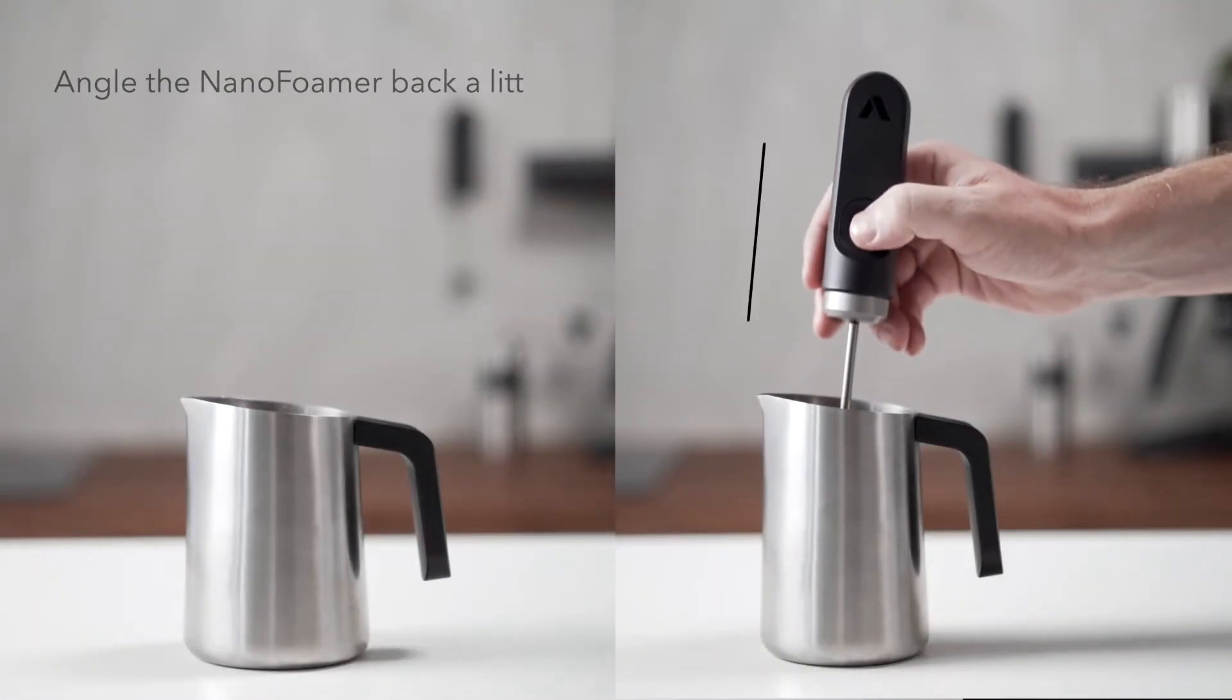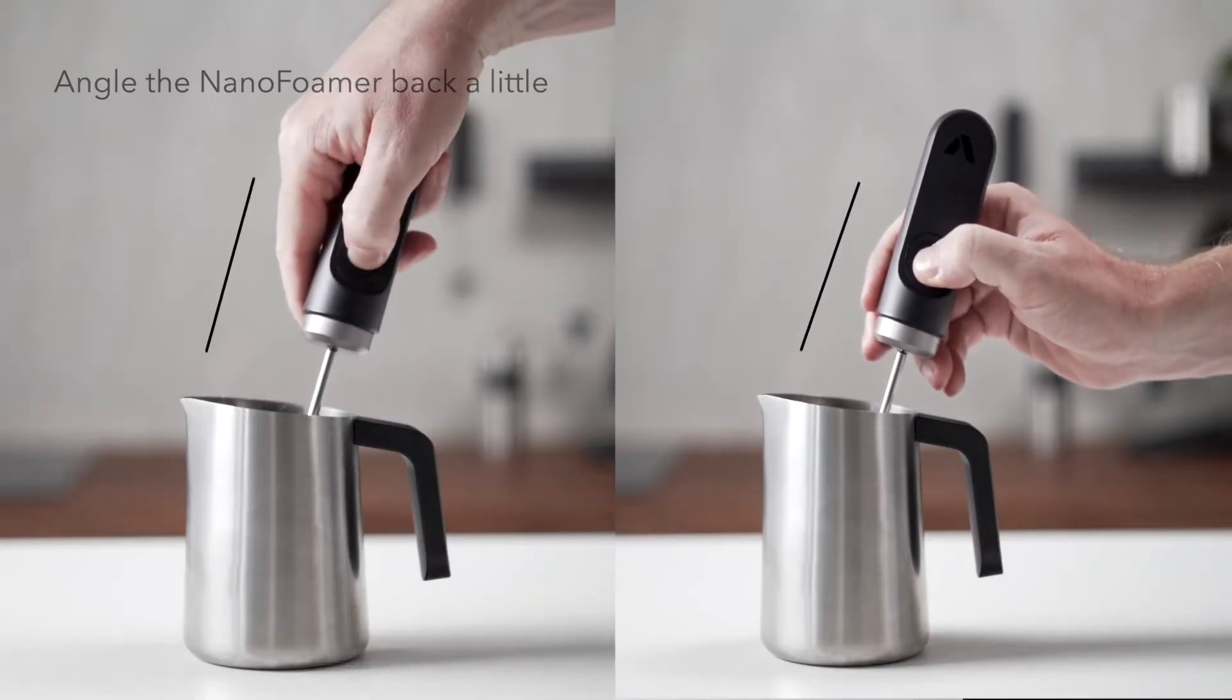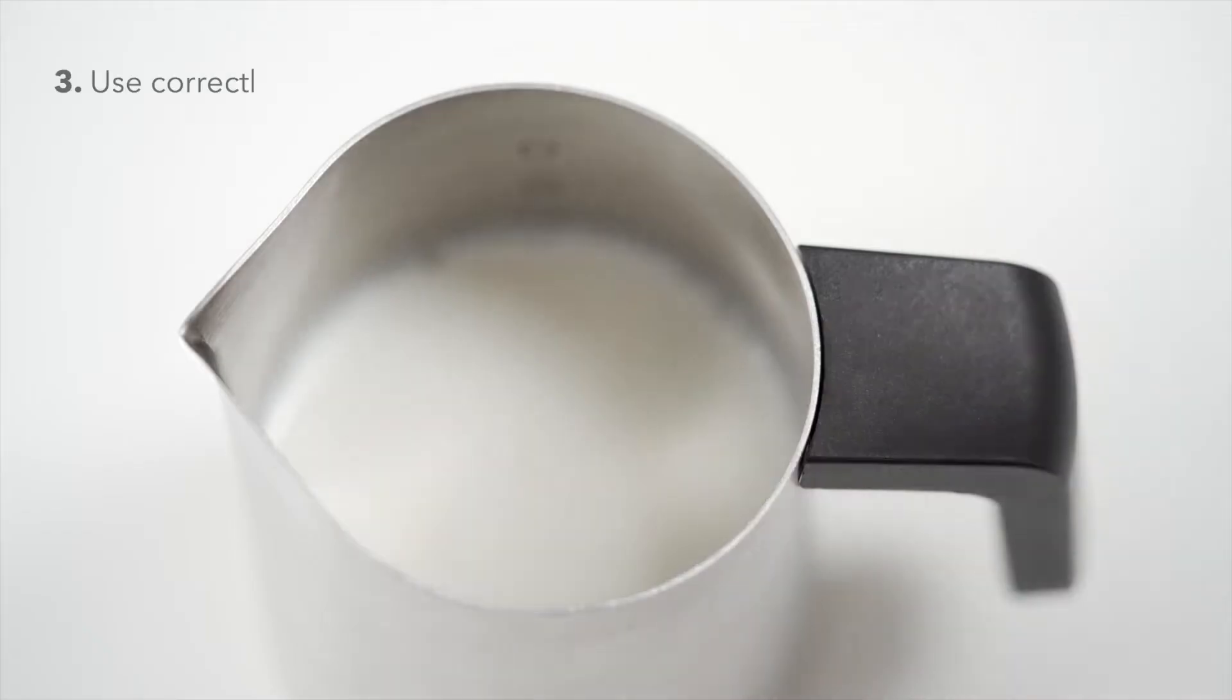Place the nano-foamer into a jug of warm milk as shown. Angle it back slightly to help the flow. Make sure your milk is between 55 and 65 degrees Celsius.